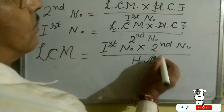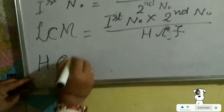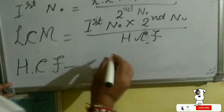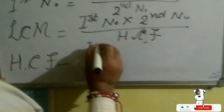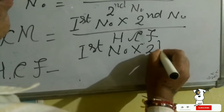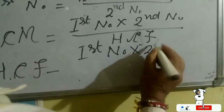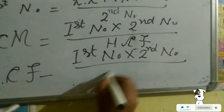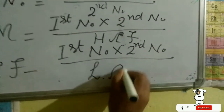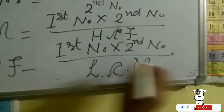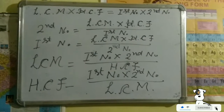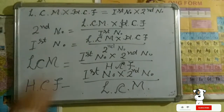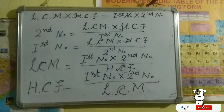If you want to get GCF, you will multiply the first number with the second number and divide by LCM. So all four values — LCM, GCF, first number, and second number — are related through the same formula.